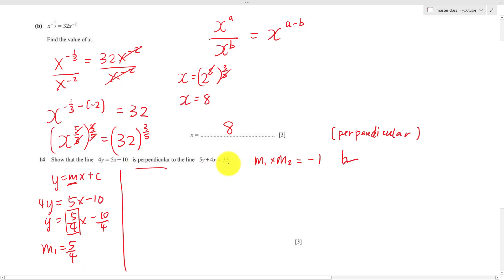I do the same thing for the second line. 5y equals to negative 4x plus 35. I move the 4x to the other side. Then y equals to negative 4 over 5x plus 35 divided by 5 is 7. I know my m2 is negative 4 over 5.